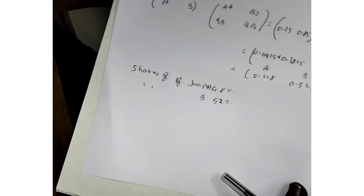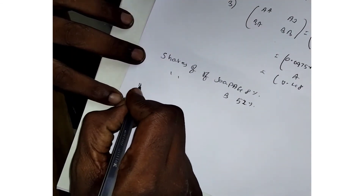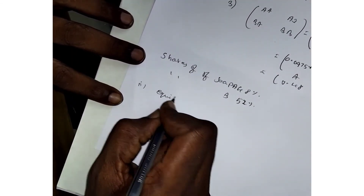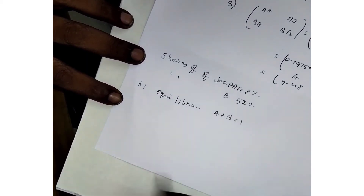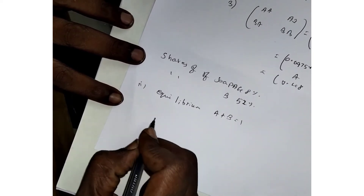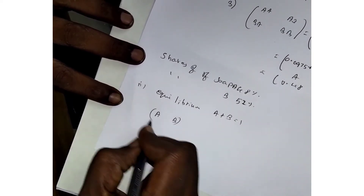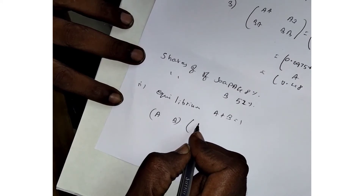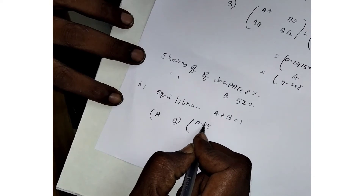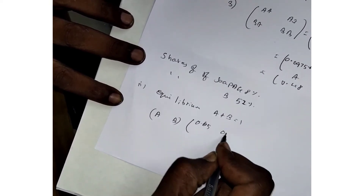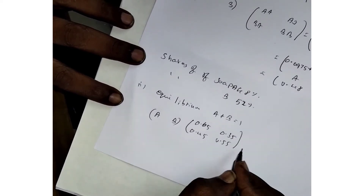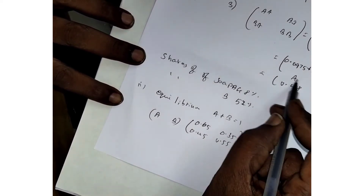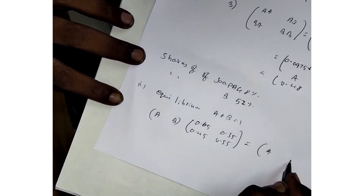For the second part, we need to find the equilibrium shares where a plus b equals 1. We write the row matrix [a, b] and multiply it with the transition matrix [0.65, 0.35; 0.45, 0.55] to get [a, b] back.